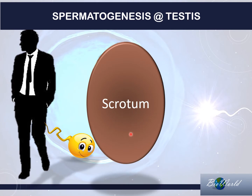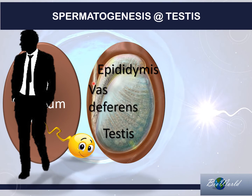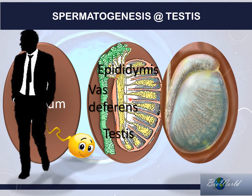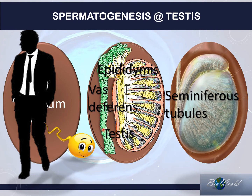Now let's have a look inside the scrotum. Here is the testis, and on top of the testis we have a structure called the epididymis. The epididymis then narrows into a tube called the vas deferens. Now let's look inside the testis. The testis is made up of many tiny tubes called the seminiferous tubules. These seminiferous tubules will all join together at the epididymis, and from there they are channeled into the vas deferens.